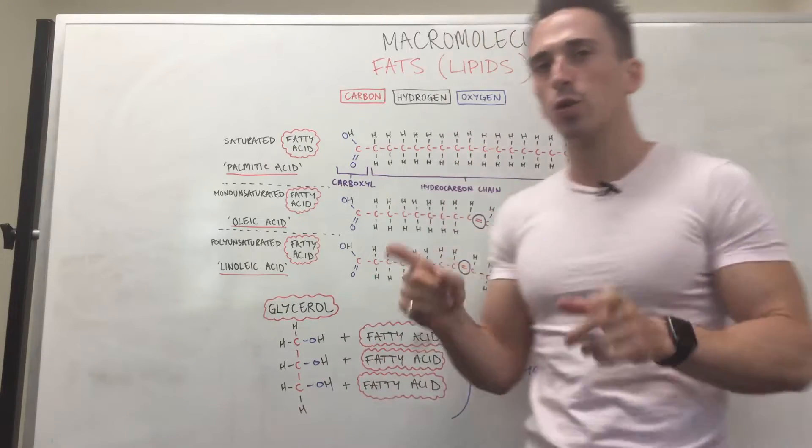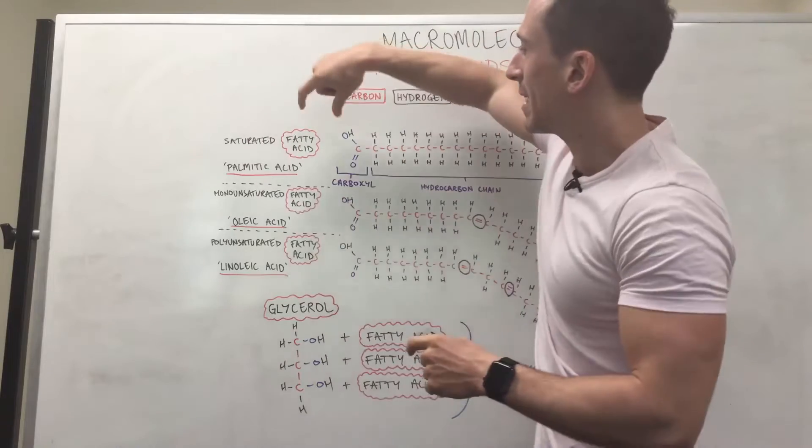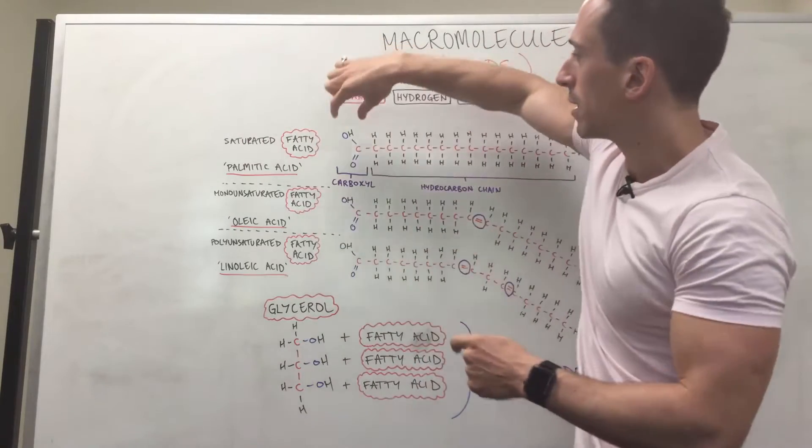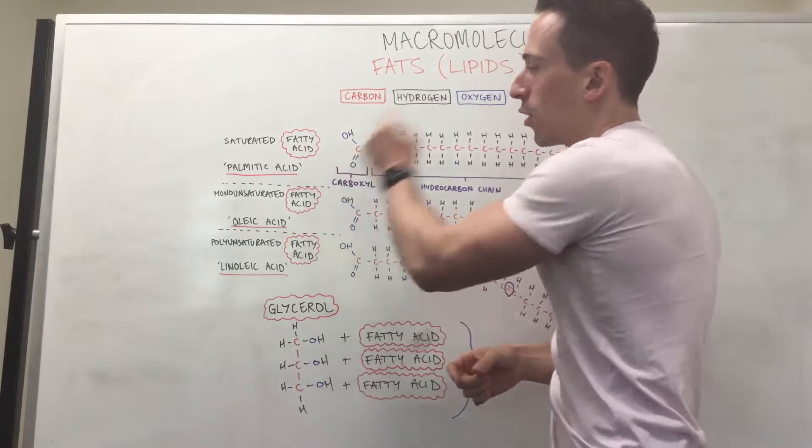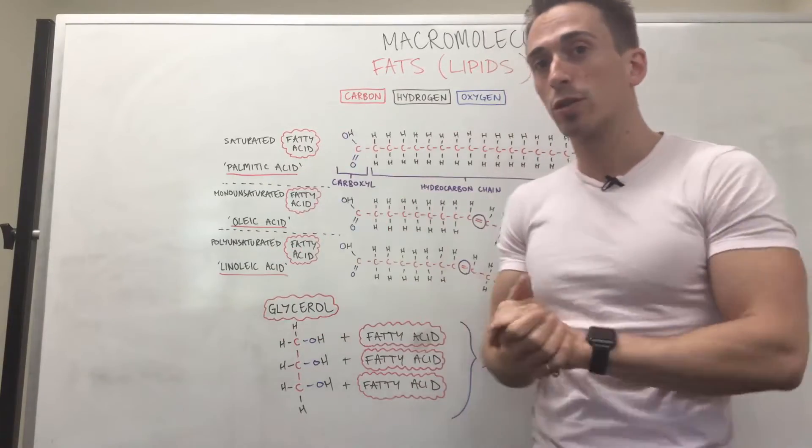You can see that each fatty acid also has this accessory group attached to it, this functional group, which is called a carboxyl, which you can see contains the oxygen. So that's all, not much oxygen at all.